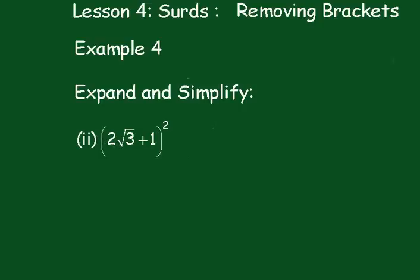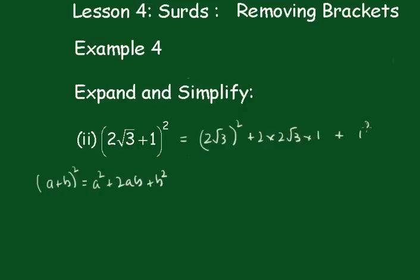Now, if you recall, a plus b all squared is a squared plus 2ab plus b squared. So this will be 2√3 all squared plus 2 times 2√3 times 1 plus 1 squared.